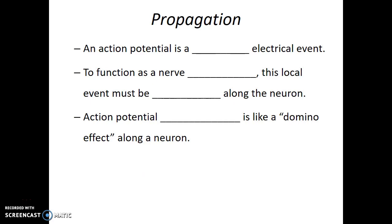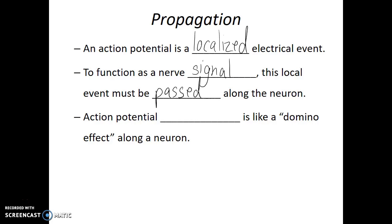An action potential — this sudden positive internal charge — is actually a localized electrical event, meaning it's only happening at one part of the plasma membrane of that neuron. For this to function as a nerve signal, this local event, this short-term positive charge, actually needs to be passed along the neuron. This is done in a process known as action potential propagation.